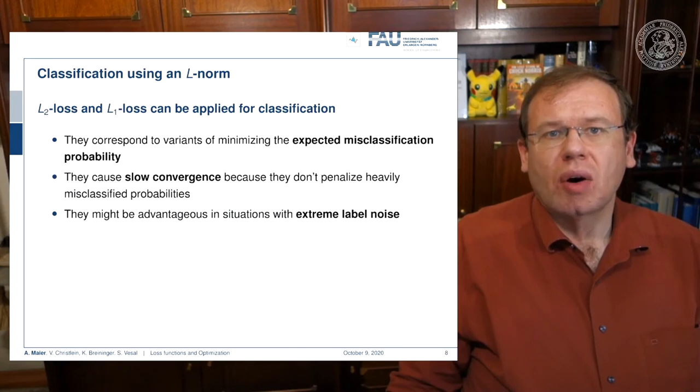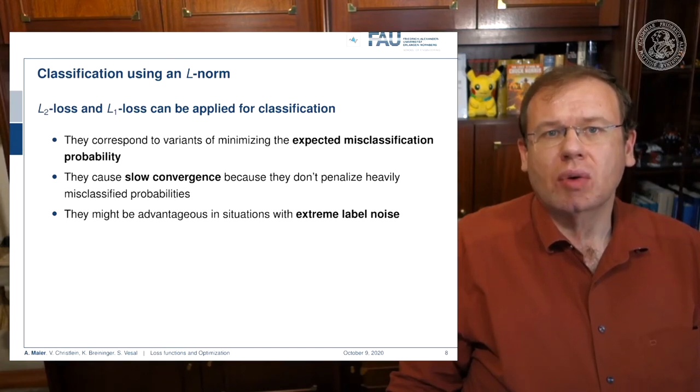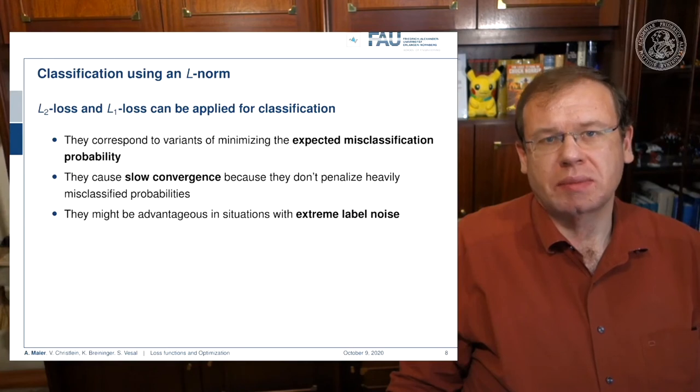There's not just L2 losses, there's also L1 losses. We can replace those and you will look at some properties of different L norms in a couple of videos. It's generally a very nice approach and corresponds to minimizing the expected misclassification probability. It may cause slow convergence because they don't penalize heavily misclassified probabilities, but they may have advantages in extreme label noise.